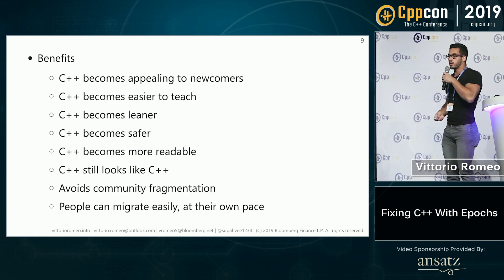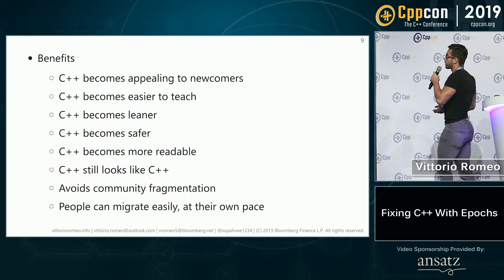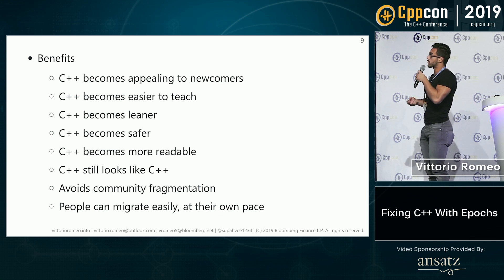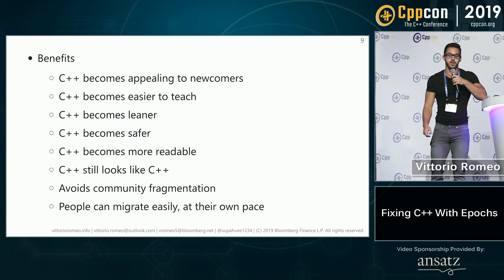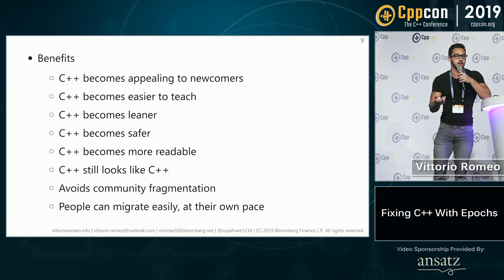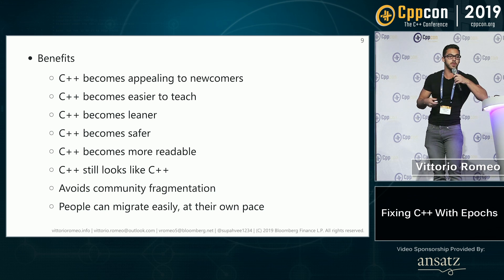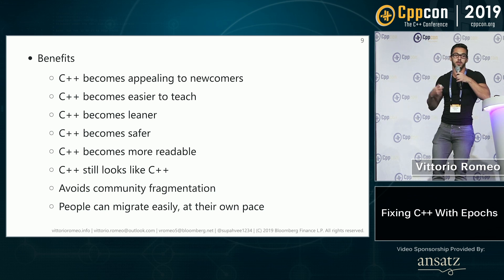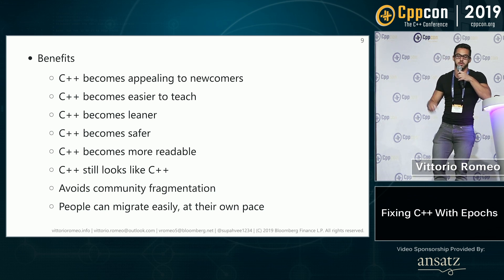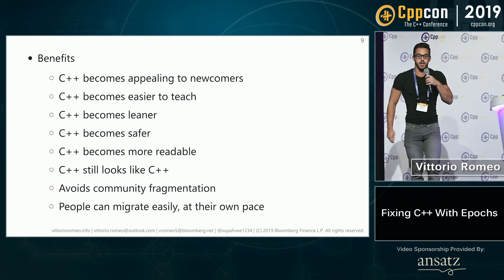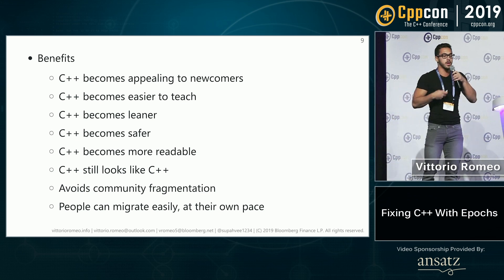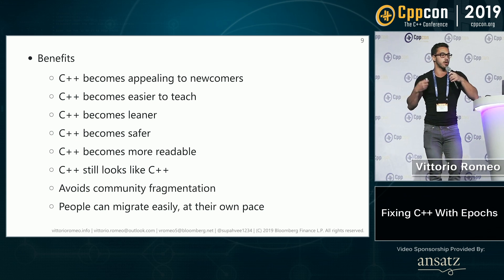Benefits: we become more appealing to newcomers. People might actually start using C++ for new projects. It's easier to teach, leaner, safer, more readable, and it will still look like C++. So we are not creating a completely new language. We will avoid community fragmentation, because someone eventually is going to come along and create their own language that is compatible with modules. But if the standard controls it, then we can have a uniform community, and again, we can migrate easily at our own pace.